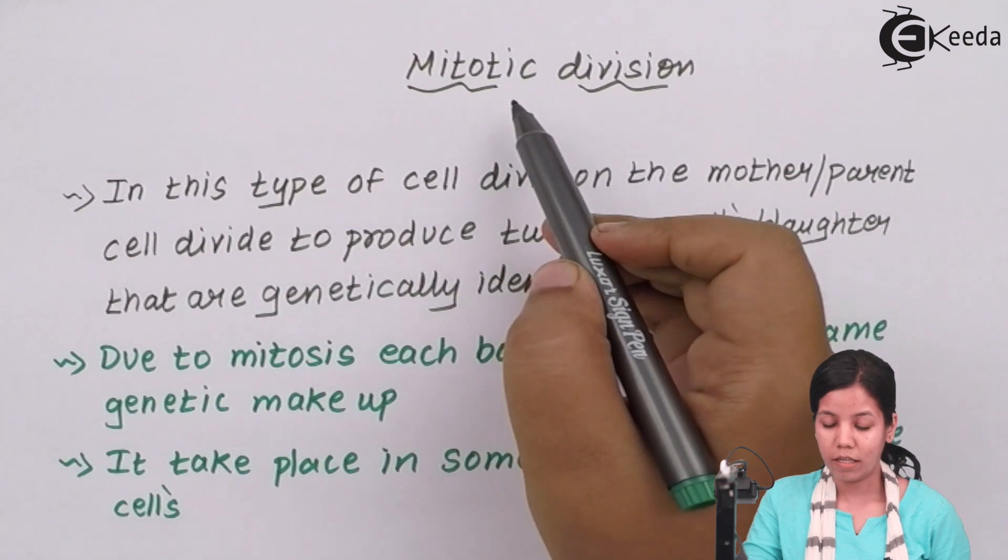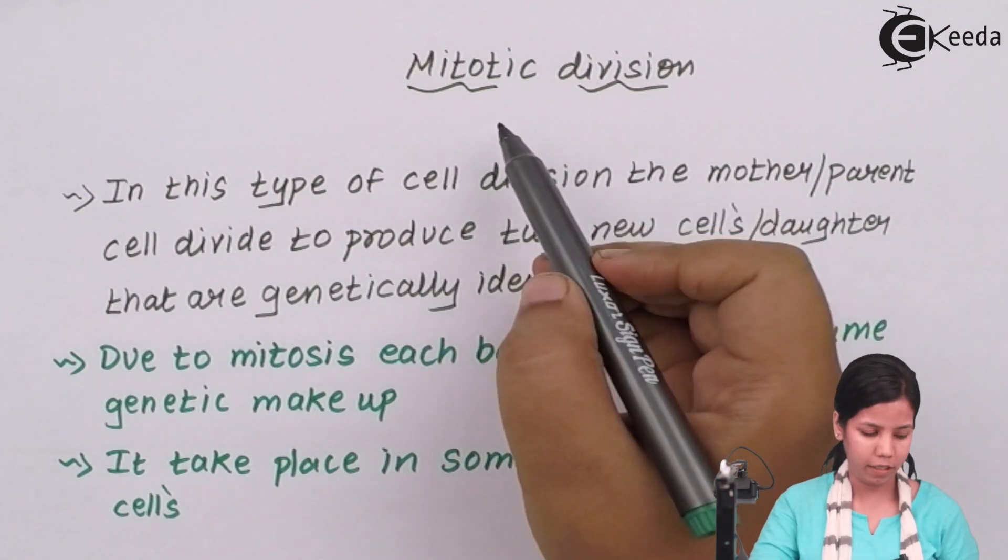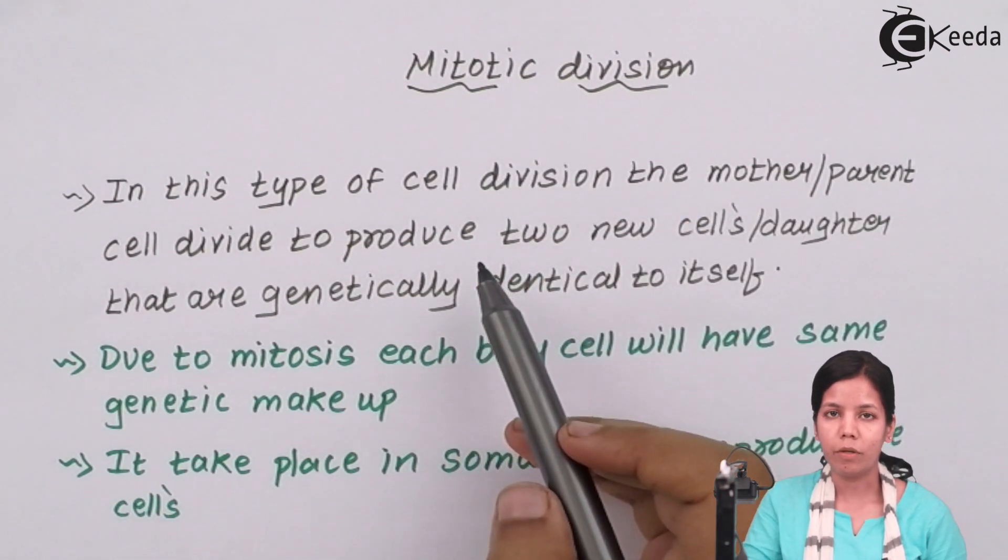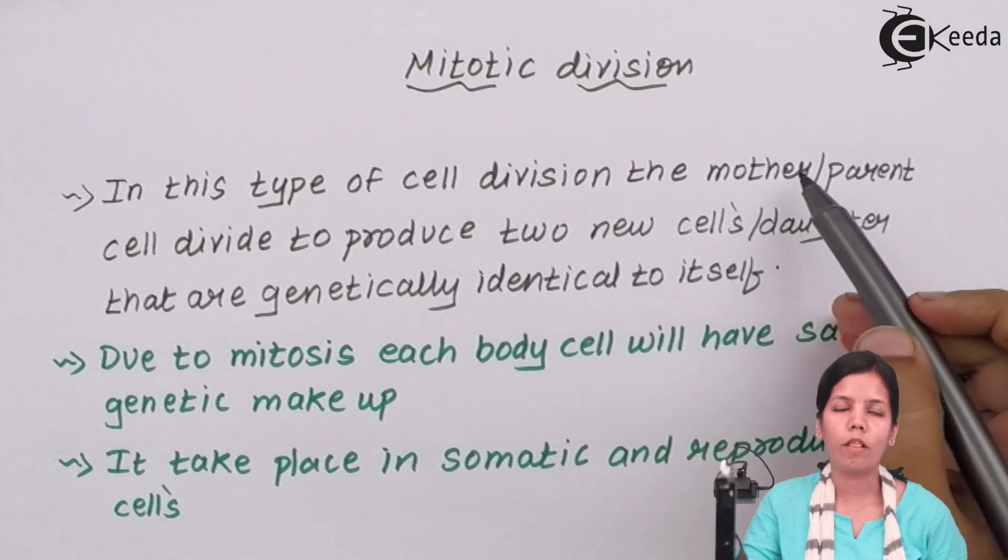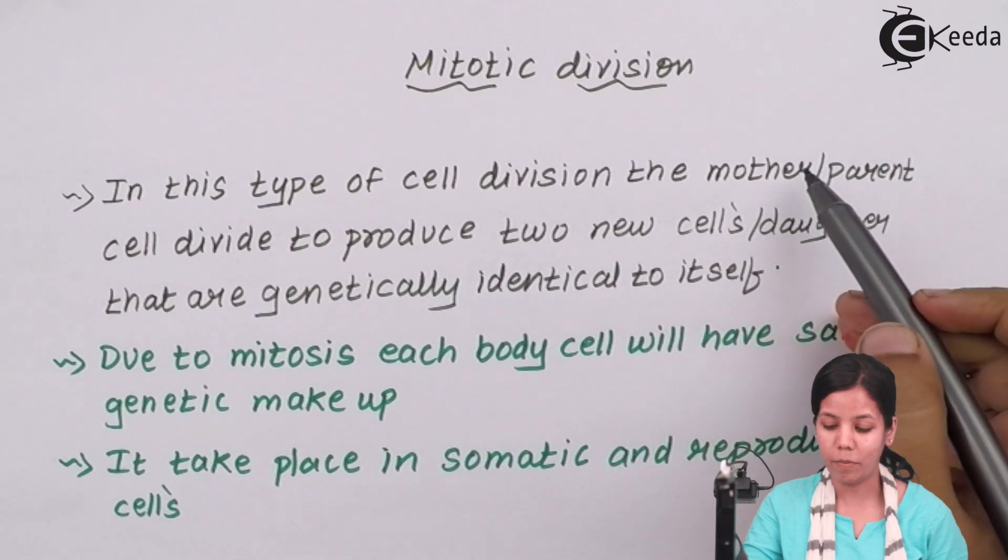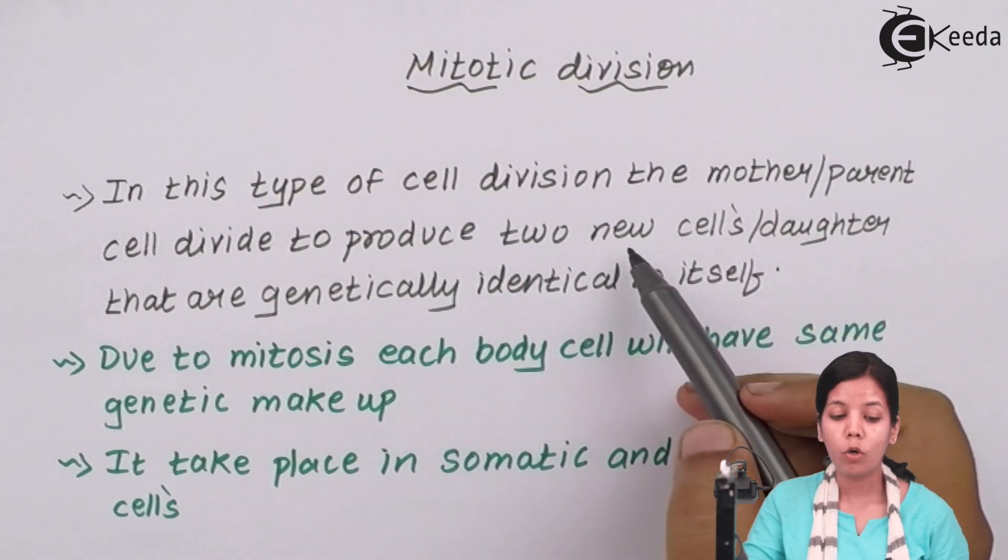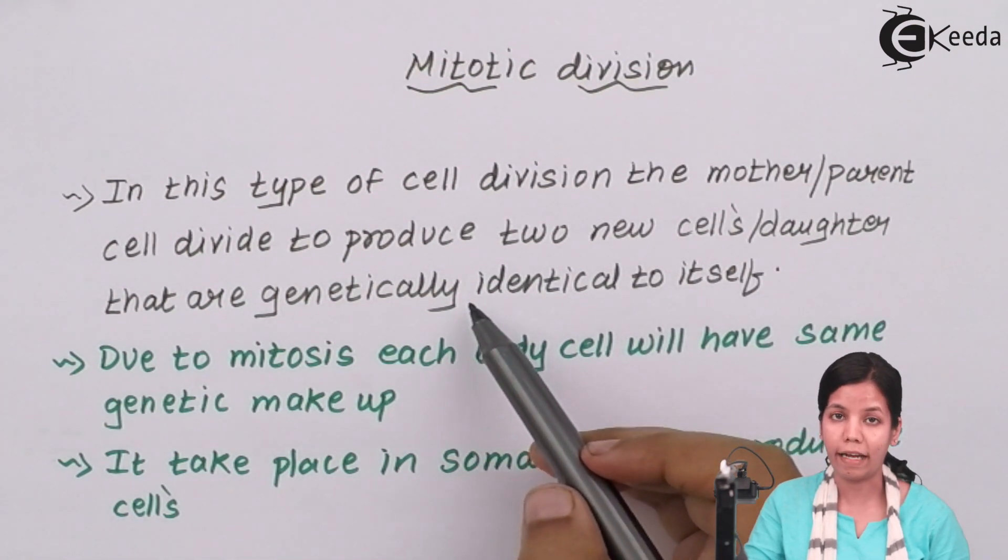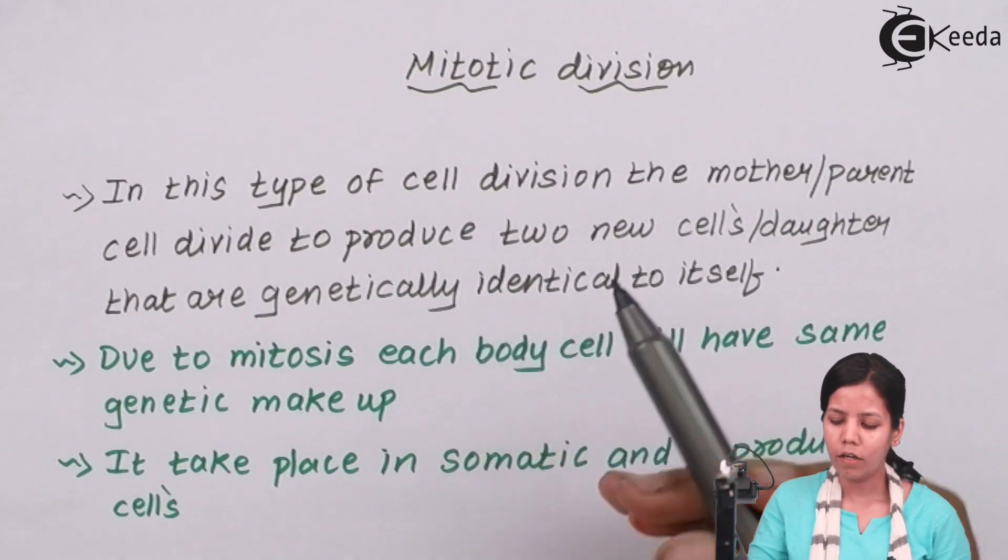Mitotic division—when we talk about mitotic division, what I'm trying to say is it is a process in which the parent cell or the mother cell divides in such a manner that it produces two new daughter cells that are genetically identical or that have the same number of chromosomes which is diploid.